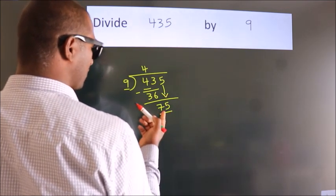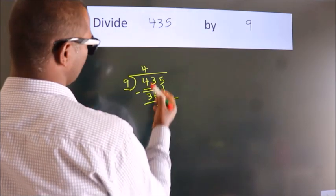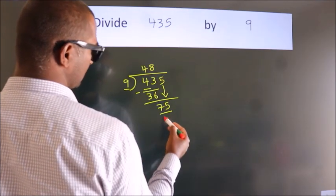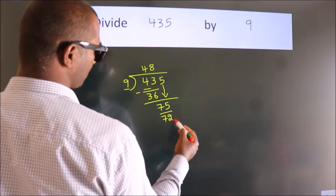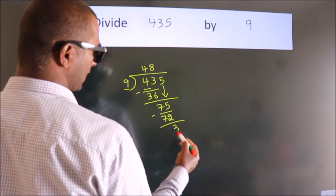A number close to 75 in the 9 table is 9 times 8 equals 72. Now we subtract. We get 3.